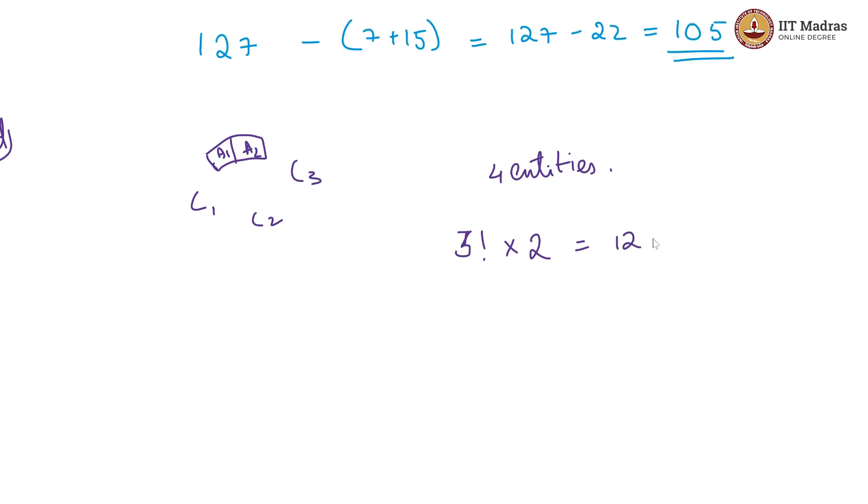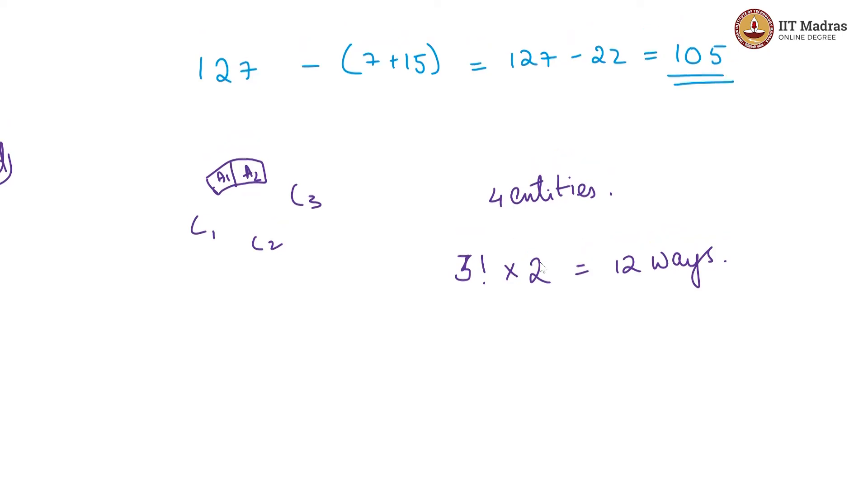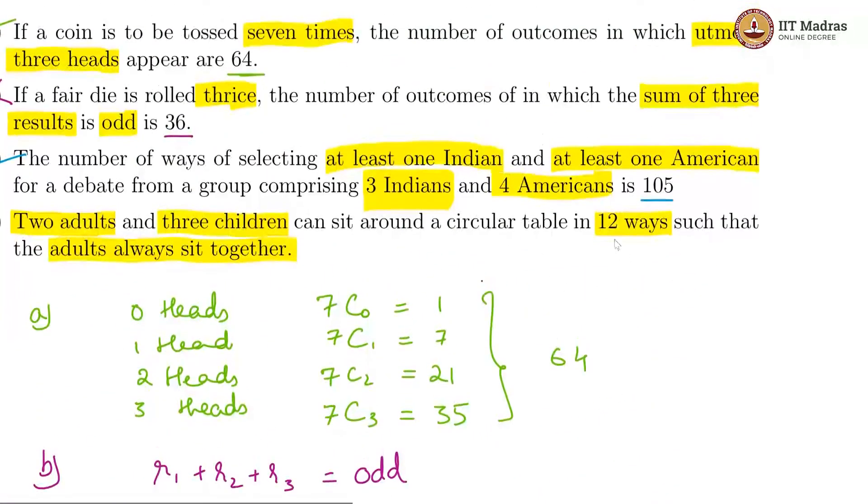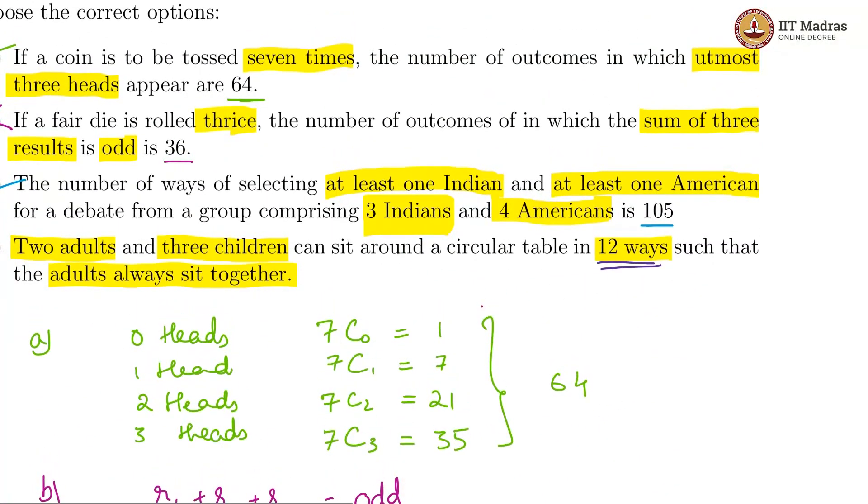So, this is 12 ways, which means D option is also correct.